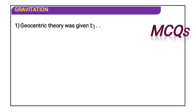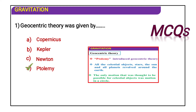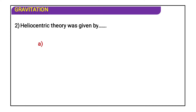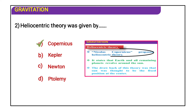MCQ: The geocentric theory was given by — option A: Copernicus, option B: Kepler, option C: Newton, option D: Ptolemy. The answer is Ptolemy. Second MCQ: The heliocentric theory was given by whom? Options are Copernicus, Kepler, Newton, and Ptolemy. The answer is Copernicus — Nicolas Copernicus proposed the heliocentric theory.